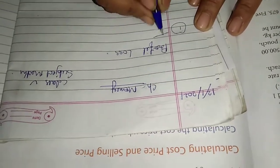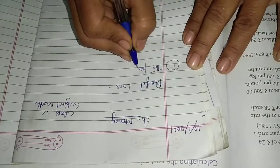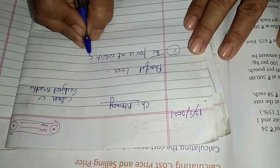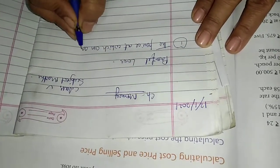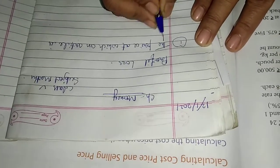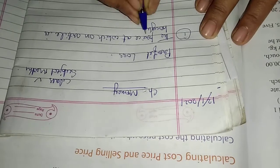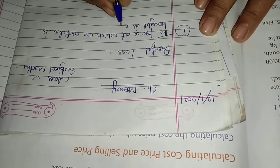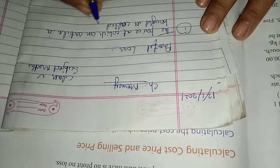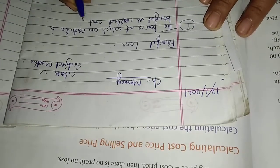So first of all, you have to write the definition. The price at which an article is bought is called cost price, means CP.